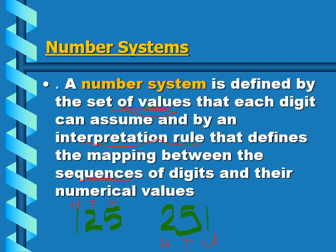The digit one in the hundreds place is larger in value than the digit five in the units place, because of the weight it's carrying. We are in base 10, so each number carries a weight of 10 to some power. The five carries a weight of 10 to the power zero, the two carries 10 to the power one, and the one carries 10 to the power two.